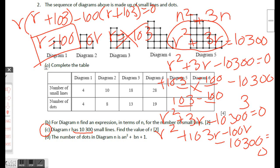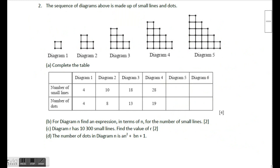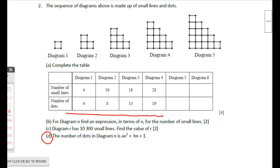Part d: the number of dots in diagram n is given as an² + bn + 1 and we need to find the values of a and b. There are two methods; the more convenient approach uses simultaneous equations by substituting known term values.